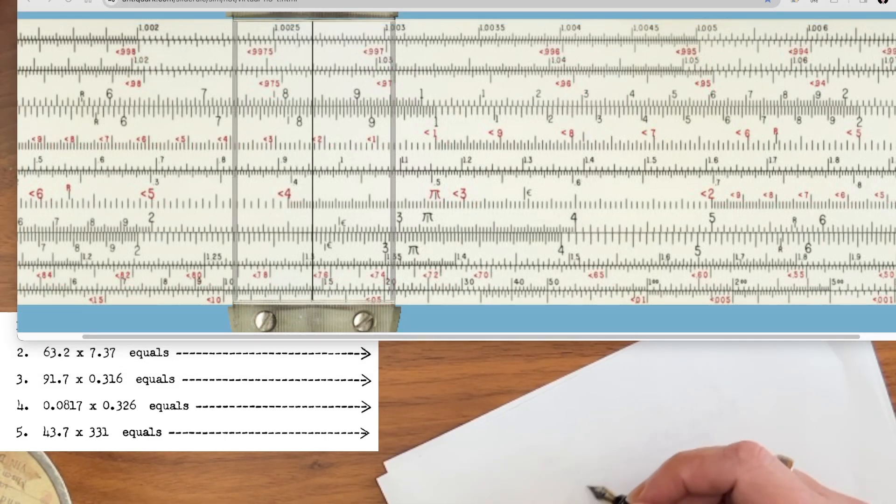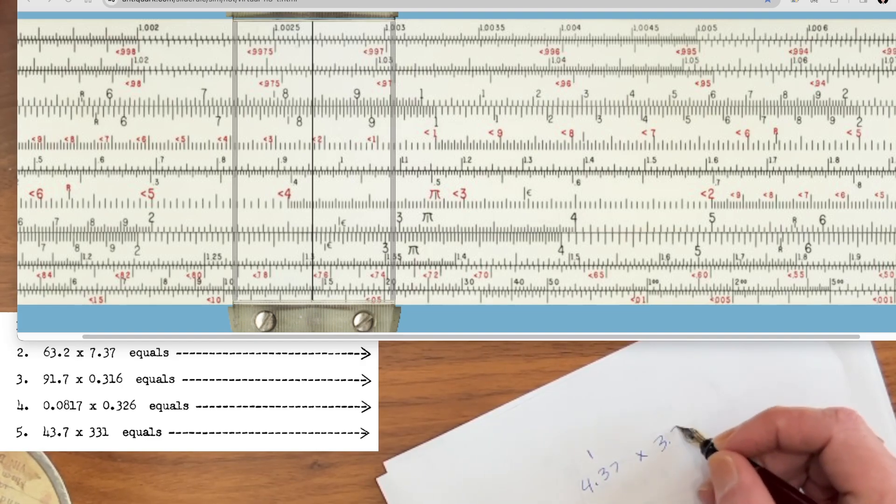So the last one is going to be 4.37 times 10 to the 1 times 3.31 times 10 to the 2. So our initial answer, 10 to the 3. 1 plus 2 equals 3. However, 4 times 3 is 12. So we're going to end up with 1.2 times 10 to the 4.